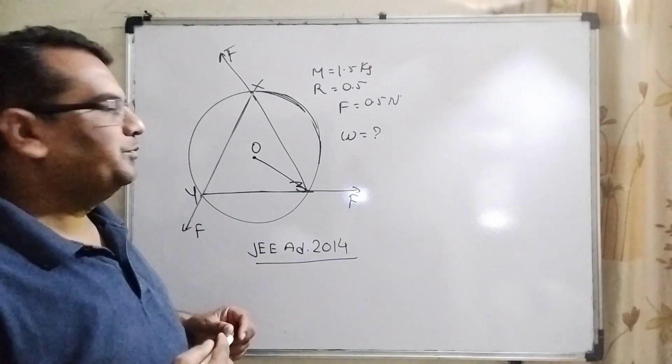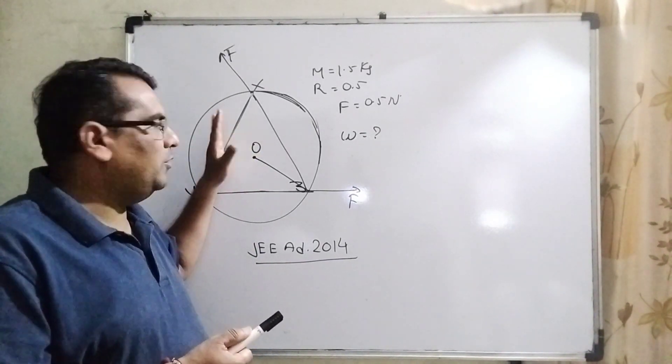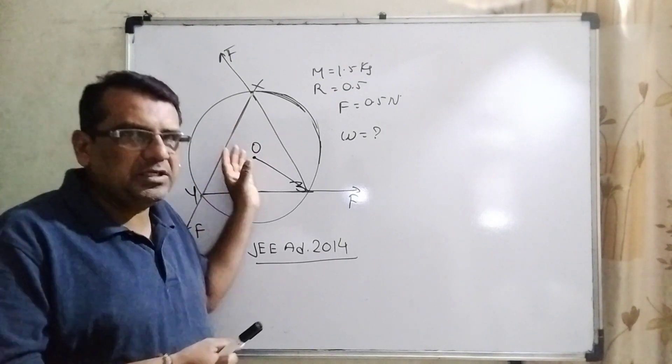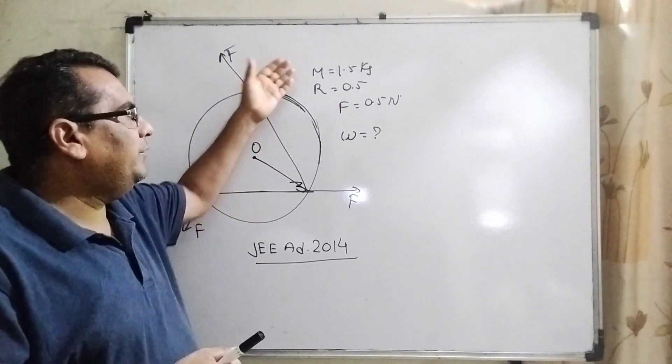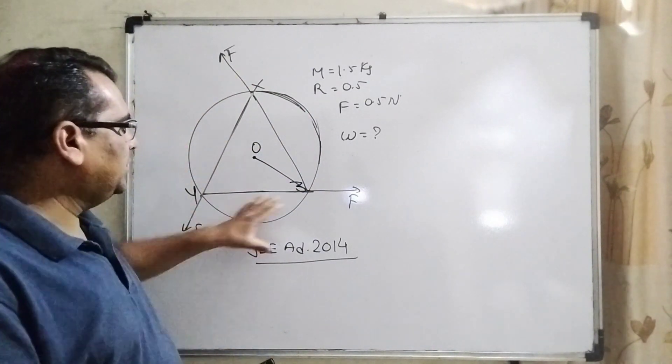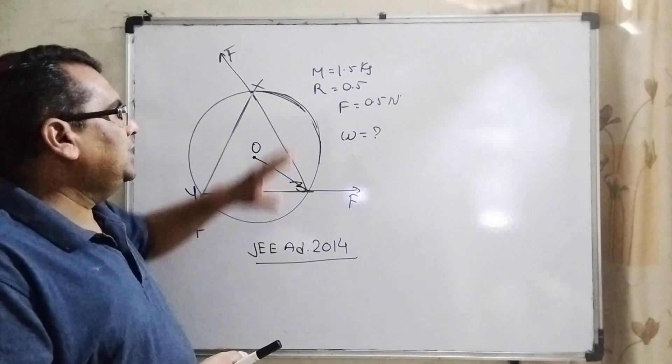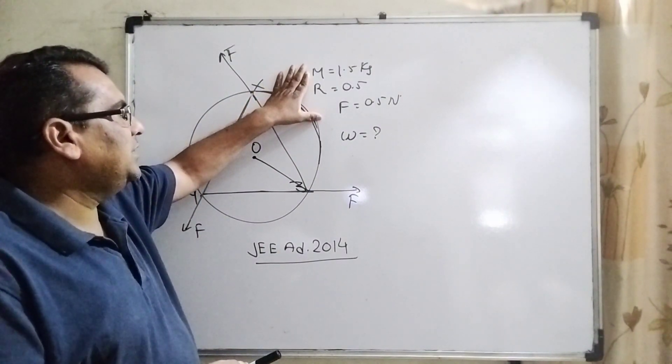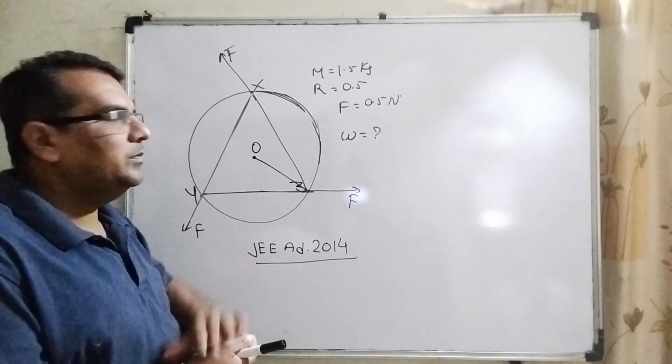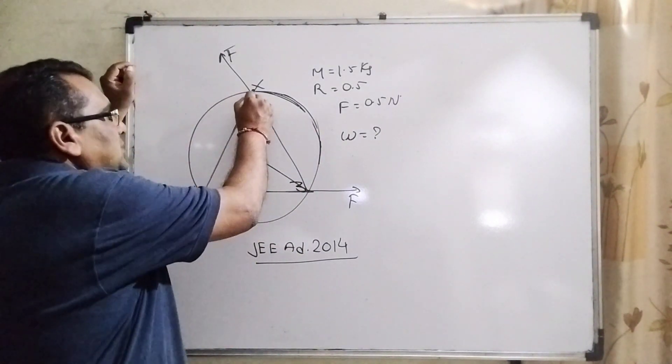As I always been saying before solving the question, firstly we have to find out what is the central idea based on this question and what is the data is given. You have given the forces from three sides, equal forces from three different sides. And this data is given: mass of the disk, radius, force, and we need to find out omega.